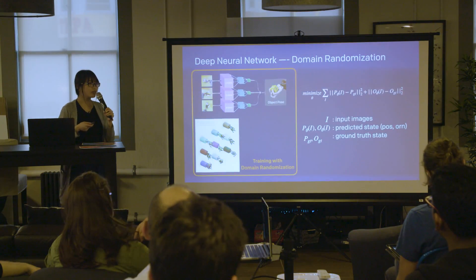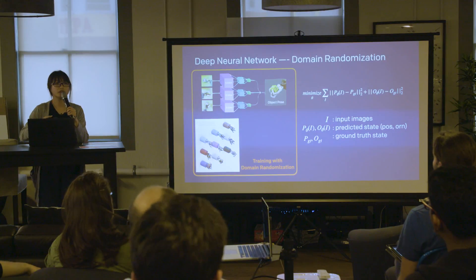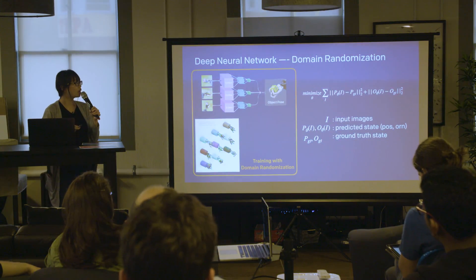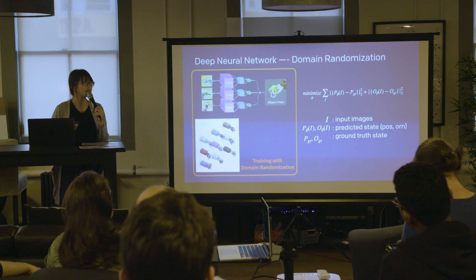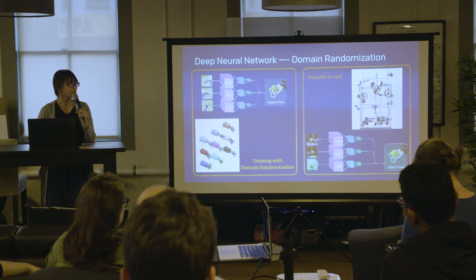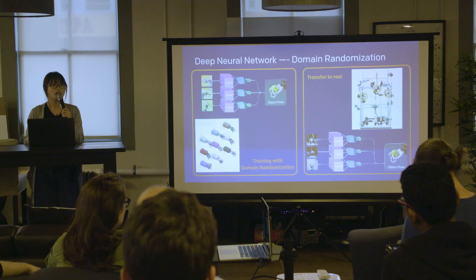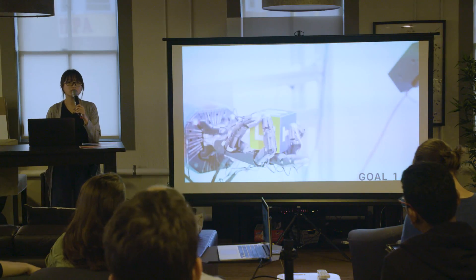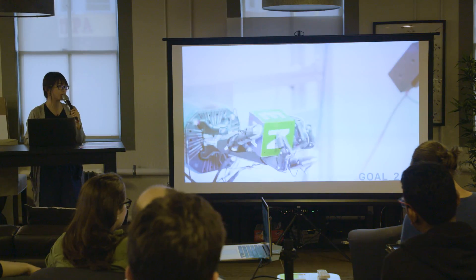By having this large amount of data and an objective function that minimizes the distance between the prediction and the ground truth, we are able to train the network in the simulator and have it work well in the real world. It can predict accurate object state in the real world, and we are able to use it to solve tasks with this state estimator.